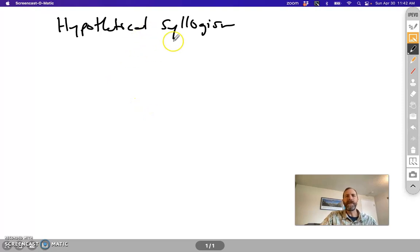A hypothetical syllogism, as a syllogism, has two premises and one conclusion. And it's completely made up of hypotheticals.